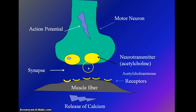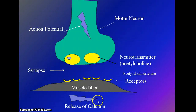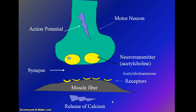Once this signal stops, no more acetylcholine binds to the receptors. That will cause the calcium to be actively transported back into the sarcoplasmic reticulum. Without the calcium, the active site is closed and myosin can no longer bind, and the sarcomere goes back to its resting length.